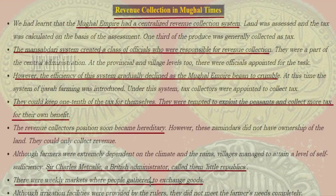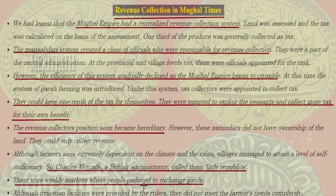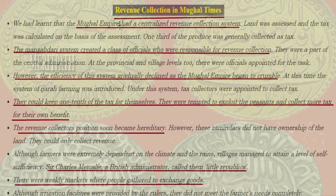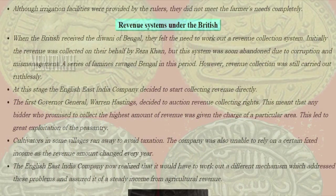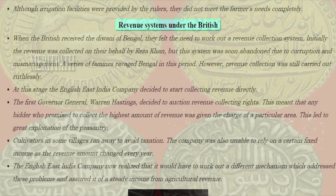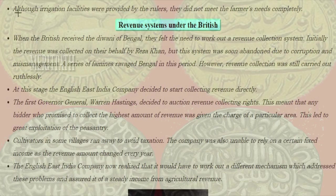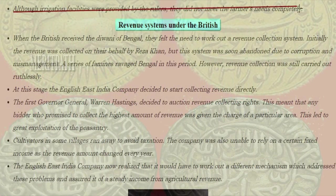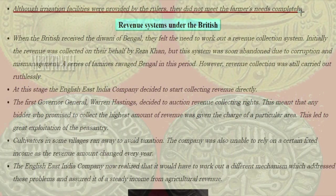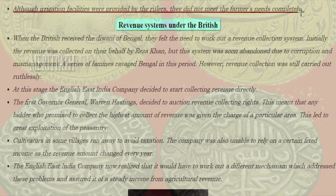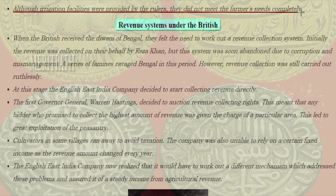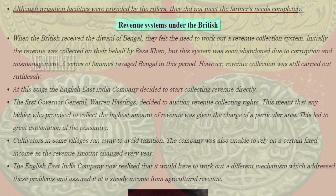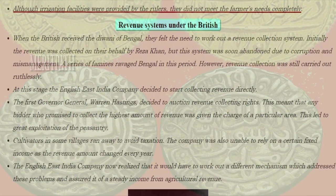Although farmers were extremely dependent on the climate and rains, villages managed to attain a level of self-sufficiency. Although irrigation facilities were provided by the rulers, they did not fully meet the farmers' needs.